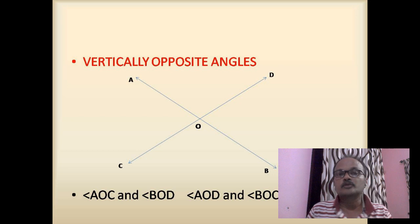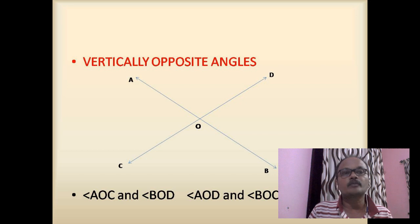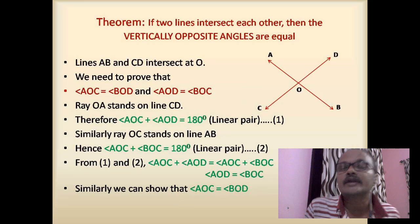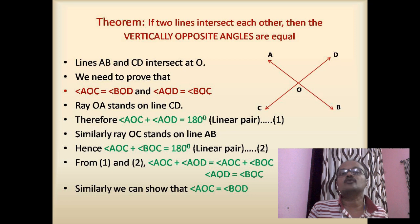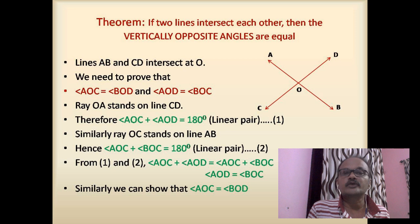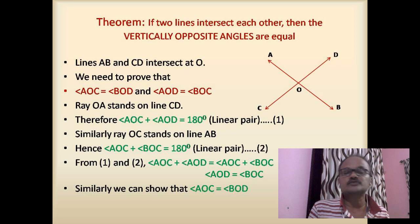So the definition of vertically opposite angles is: when two lines intersect, four angles are formed, and the angles which are opposite to each other are called vertically opposite angles. Now we move on to an important theorem: if two lines intersect each other, then the vertically opposite angles are equal. Lines AB and CD intersect at point O, and we need to prove that angle AOC equals angle BOD, and angle AOD equals angle BOC.